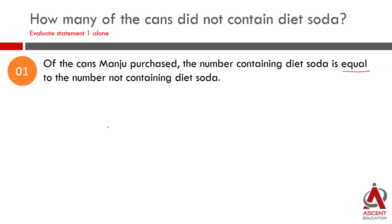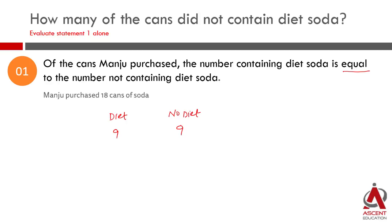Which means — how many cans did she purchase? It has been told to us that she purchased a total of 18 cans. Equal number of cans contain diet soda and equal number do not contain diet soda. So that means 9 cans each. In Statement 1, we have been able to find a unique answer to this question — how many of the cans did not contain diet soda? So Statement 1 is sufficient to find the answer.